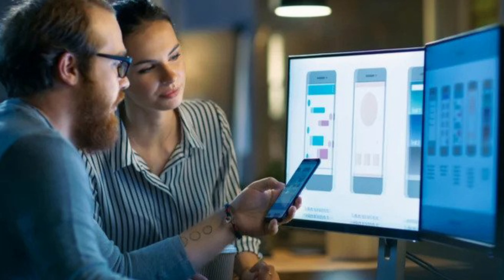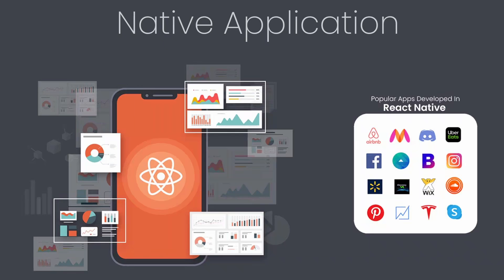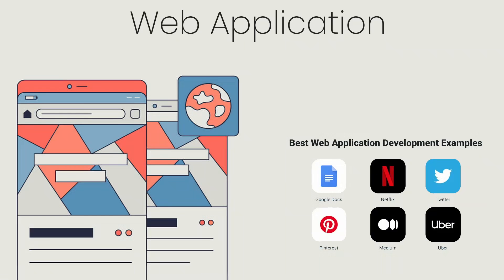Mobile apps have a rapidly growing industry that attracts businesses from many industries. There are three types of categories in mobile applications. The first is the native application — a type of app that is built and developed using a particular coding language for a specific type of device platform, such as Android or iOS.